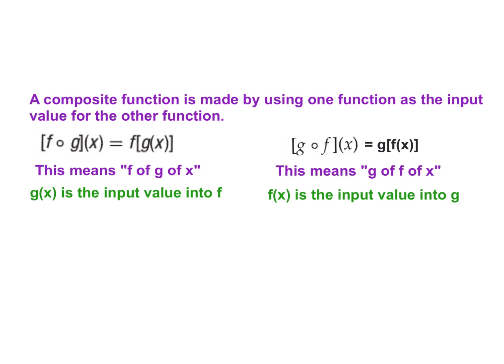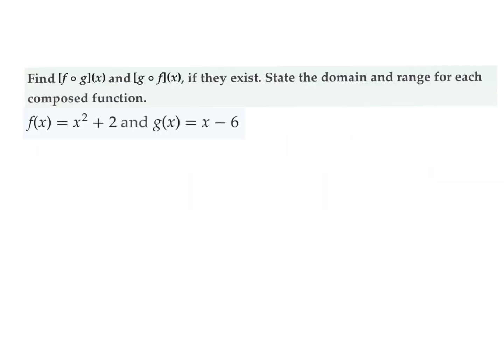Here's an example. Here's the example that we're going to go through. Now, notice in the directions here, it says find f of g of x and also g of f of x, if they exist. Then we're going to state the domain and the range for each composed function. So after you finish making the composition function, that's called the composed function. We have two functions here, f of x. That equals x squared plus 2. And then we have g of x, which equals x minus 6.